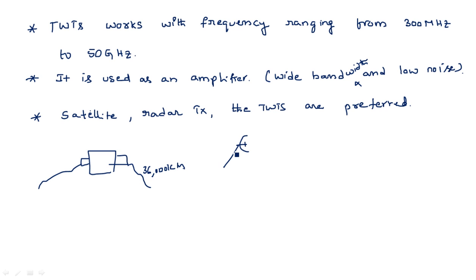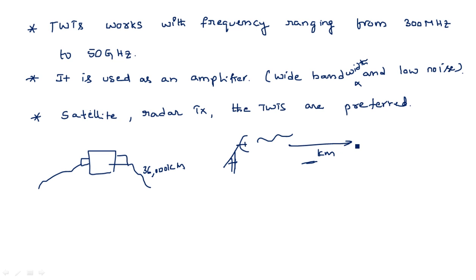Radar is used to detect any type of signal, and when transmitting that signal it has to travel a range of hundreds to thousands of kilometers — like 100, 200, 500, or 1000 kilometers. So the signal must be very powerful, which is why TWTs are preferred to amplify the signal in radar applications.